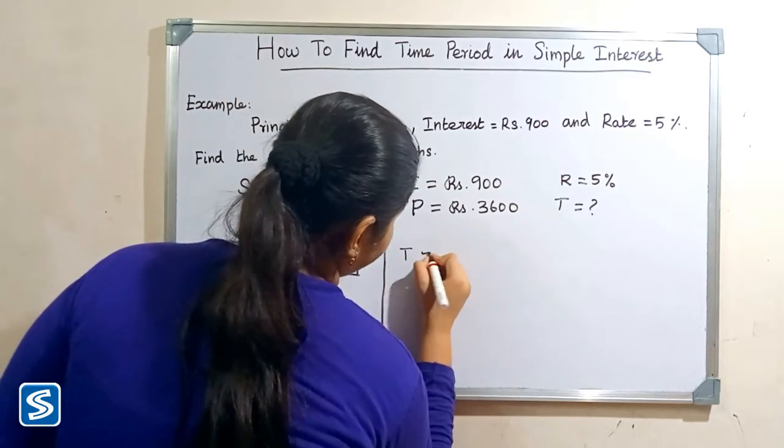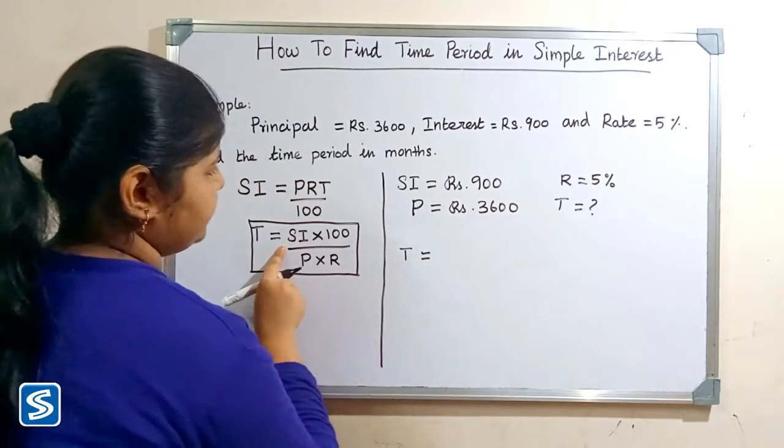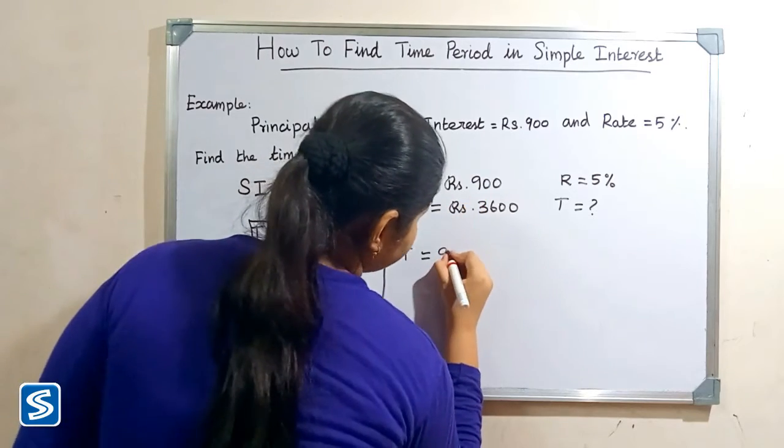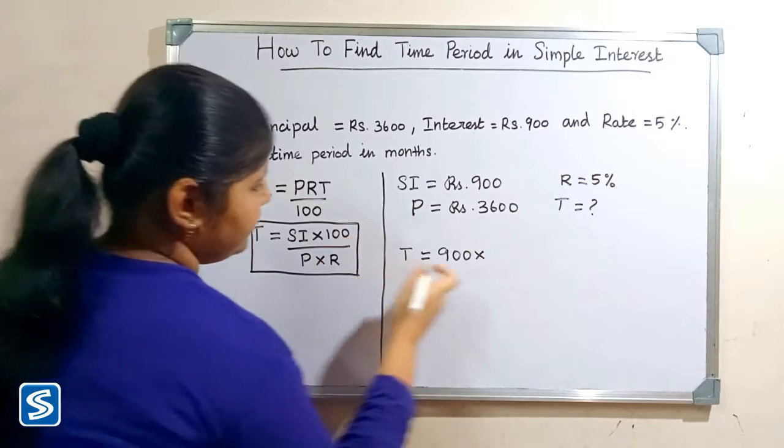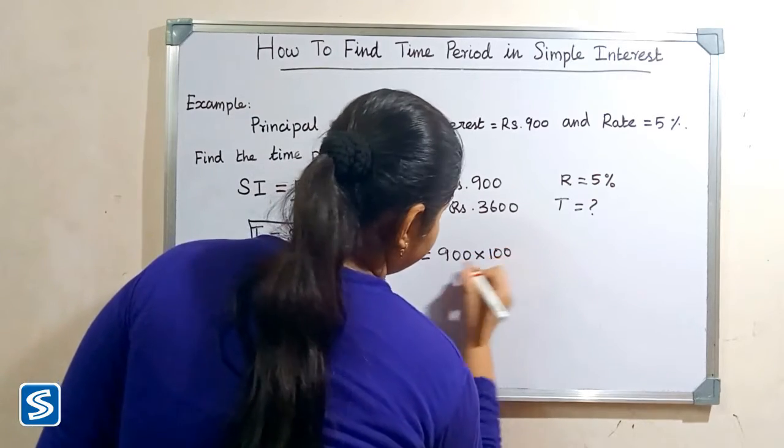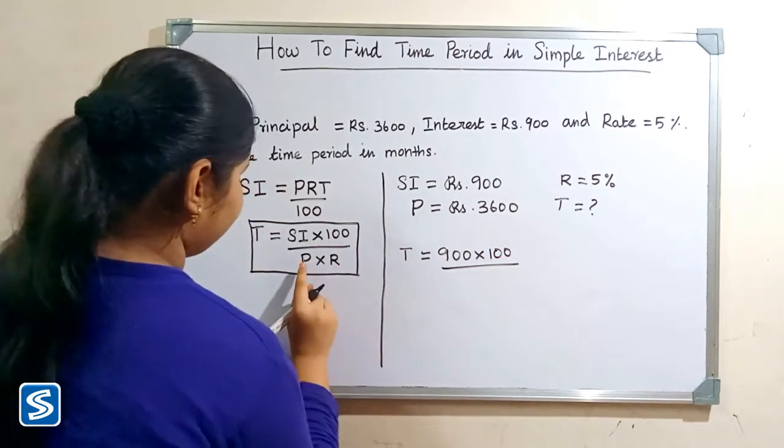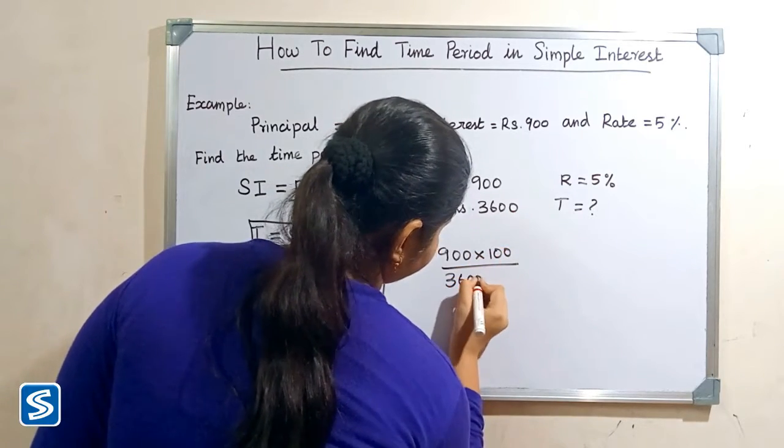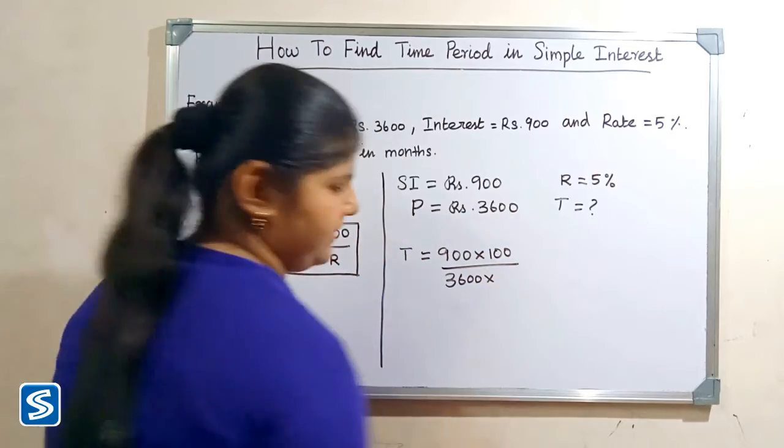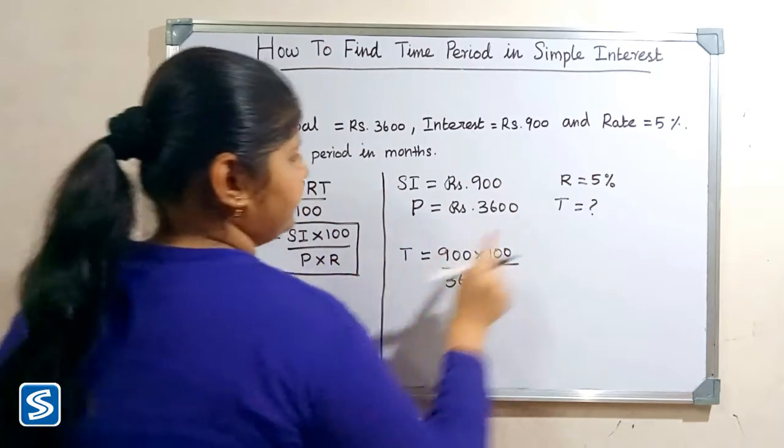So time period T is equal to, here simple interest is 900, so 900 multiply 100, divided by here principal amount is 3600, so 3600 multiplied, here rate of interest is 5.